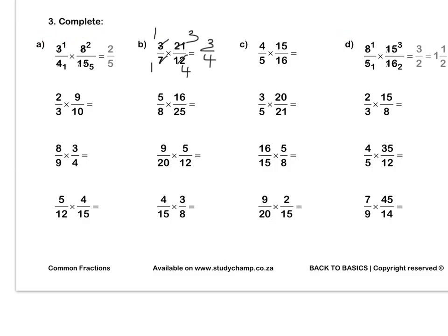Question D. We've simplified our 15 and our 5 by dividing by 5, giving 1 and 3. We've simplified our 8 and our 16 by dividing by 8, giving 1 and 2. We multiply out to get 3 over 2, which as a mixed number is 1 and a half. Press pause to complete question D by yourself. When you are done, use the memo to mark all your answers on this page.